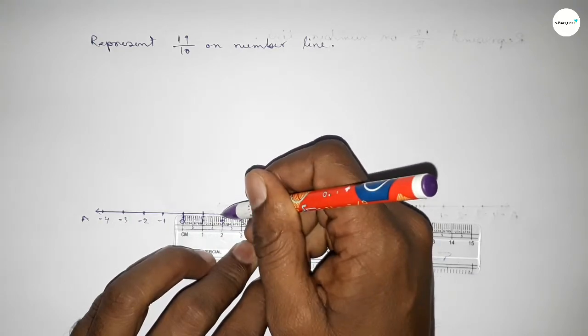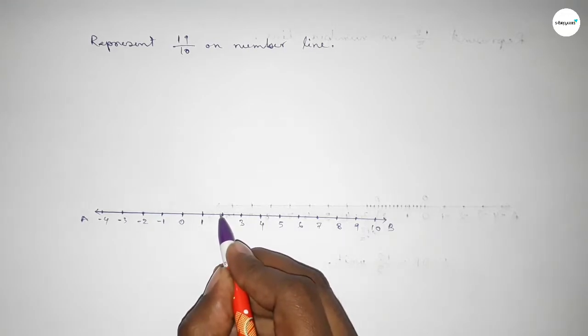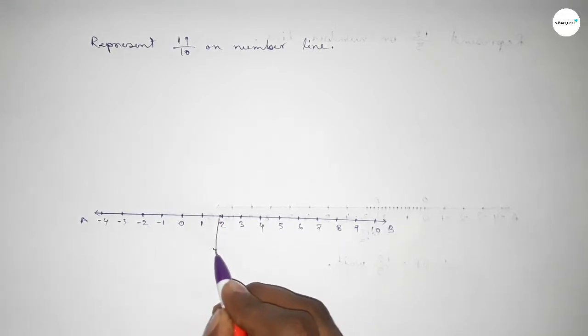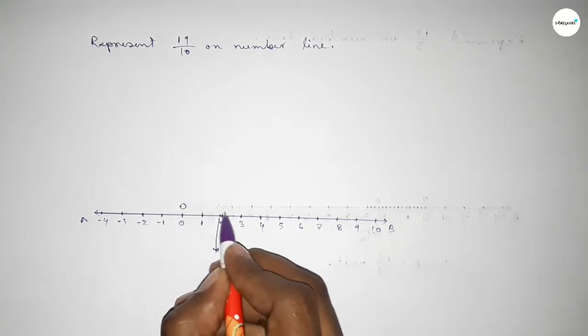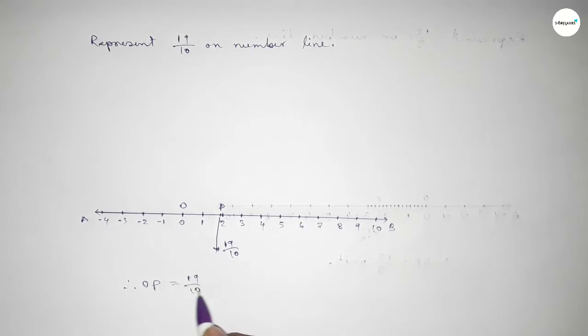So this is 1.9 or 19/10 on the number line. And taking O and P, therefore OP equals 19/10 unit. That's all, thanks for watching.